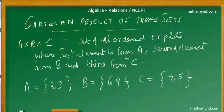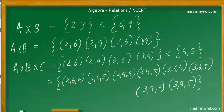Three simple sets: set A consisting of elements 2 and 3, set B consisting of elements 6 and 9, and set C consisting of elements 4 and 5. Now, the Cartesian product of sets A and B.